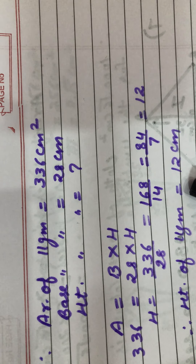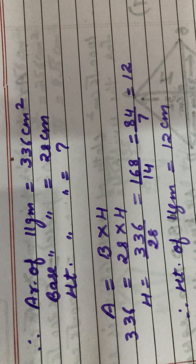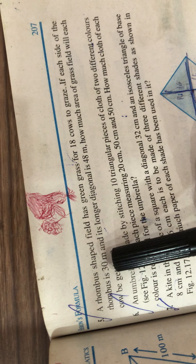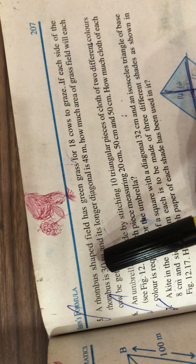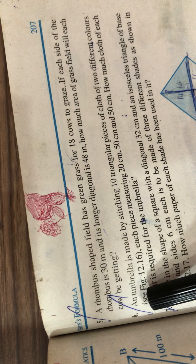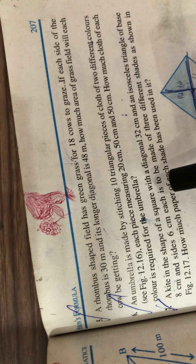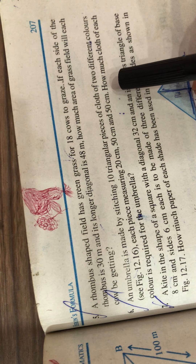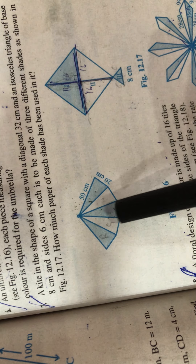Now come to question number 6. Question number 5 is also deleted as it is based on a rhombus — diagonals are given and we have to divide the rhombus (a quadrilateral) into two triangles, so this portion is deleted. Question 6: An umbrella is made by stitching triangular pieces of cloth of two different colors, each piece measuring 20 cm, 50 cm, and 50 cm. How much of each color is required for the umbrella?